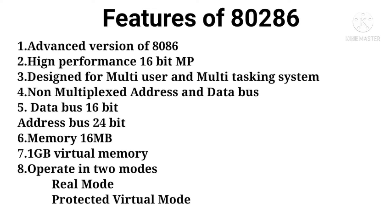The next feature is that it can work in two modes: one is called real mode and another is called protected virtual mode. In the real mode of 80286, it can work the same as 8086 but quite faster, so we can call it a faster 8086. In the protected virtual mode, it can utilize its 16 MB physical memory along with 1 GB virtual memory. The details of real and protected mode will be discussed later.